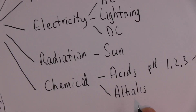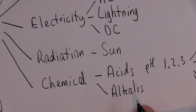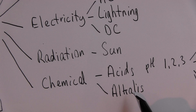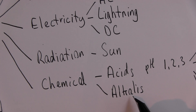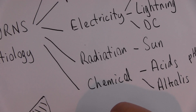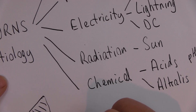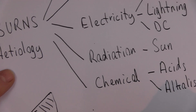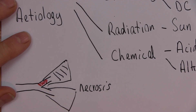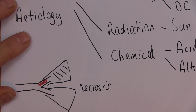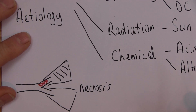Whereas alkalis actually dissolve protein and collagen — they will physically dissolve tissues and can therefore cause deep tissue destruction. They cause necrosis — death of tissue — in exactly the same way acids will, but the alkalis do it by dissolving the tissues, and very nasty wounds can result.